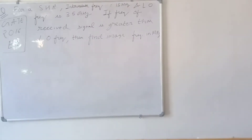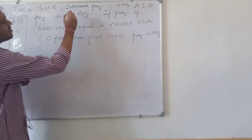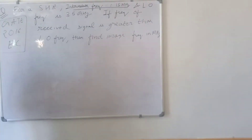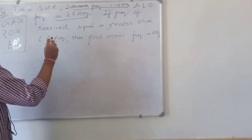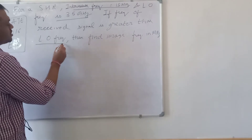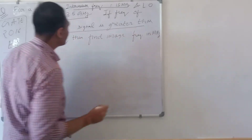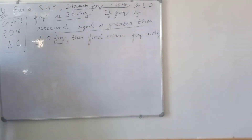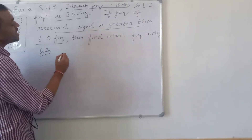This question is from 2016 and is based on the super-heterodyne receiver. For a super-heterodyne receiver, the image frequency is to be found, the intermediate frequency is 15 megahertz, and the local oscillator frequency is 3.5 gigahertz. A very important condition is given: the frequency of the received signal is greater than the local oscillator frequency.